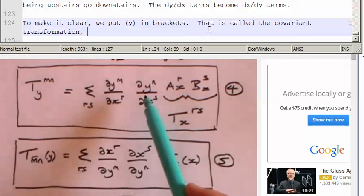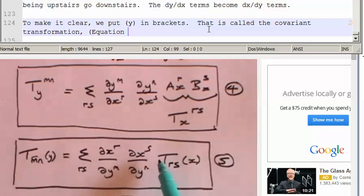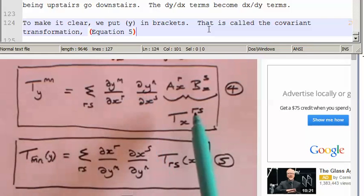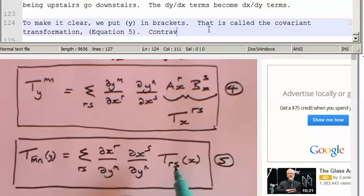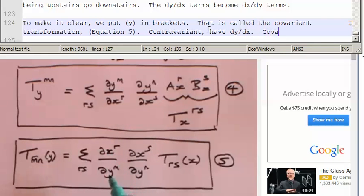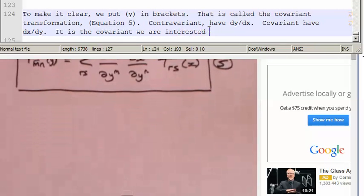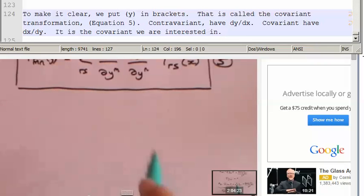So this is called the contravariant, this is called the covariant. Contravariant have the indices upstairs, covariant have the indices downstairs. Contravariant have dy by dx terms, covariant have dx by dy terms. And it is actually the covariant form of transformation that is going to be of interest to us. Now I want to do a little bit of manipulation with something as basic as Pythagoras.